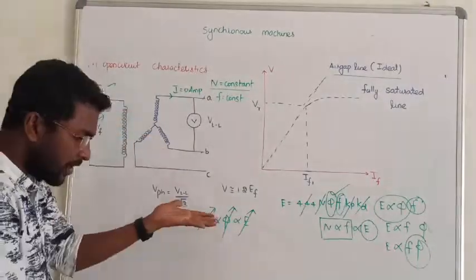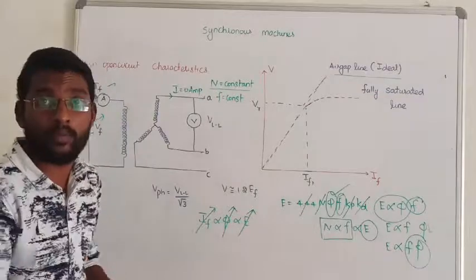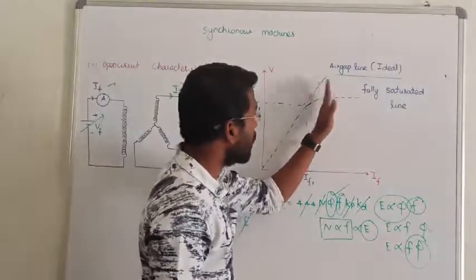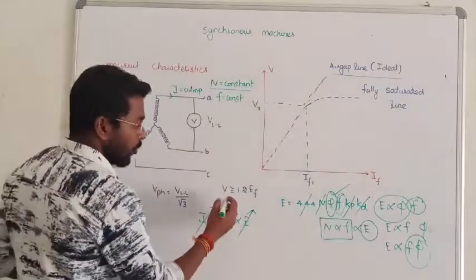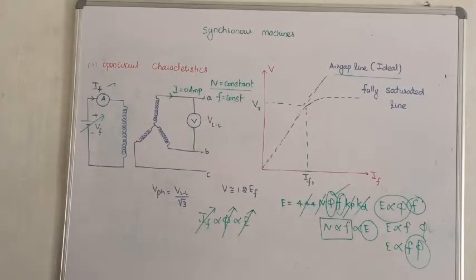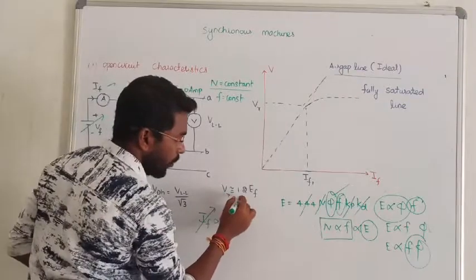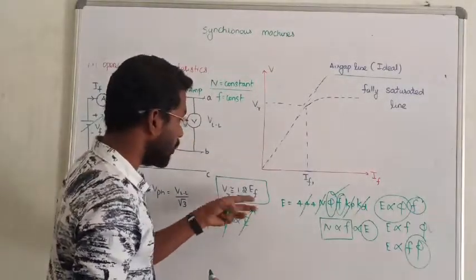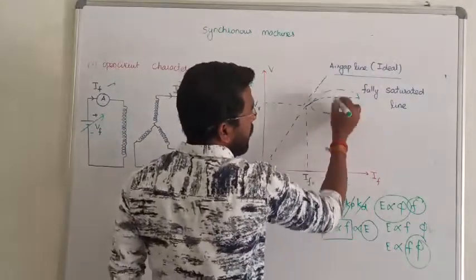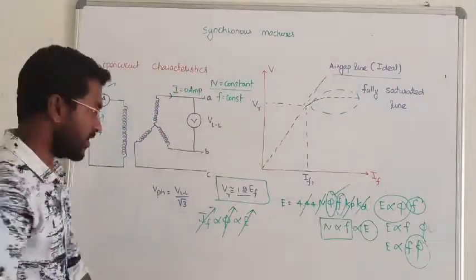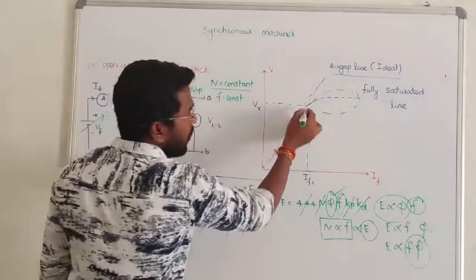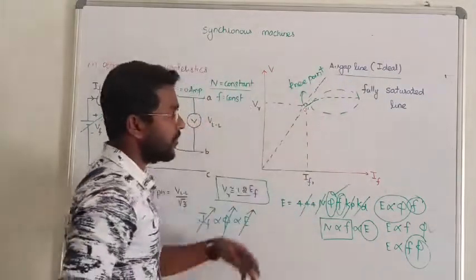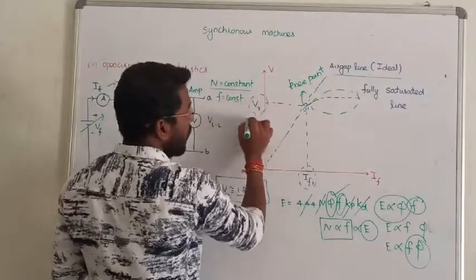When the voltage is increased and reaches the rated voltage, the machine becomes saturated. We go up to 1.2 times of the rated field voltage. This line is called the fully saturated line, and the straight line is called the ideal characteristics. The rated voltage is shown on the curve. The point at which the machine begins to saturate is called the knee point. The corresponding field current gives the rated voltage of the machine.